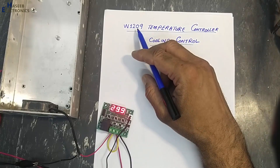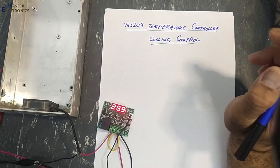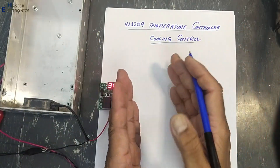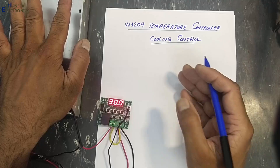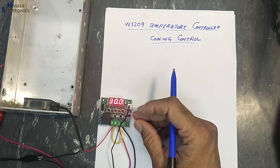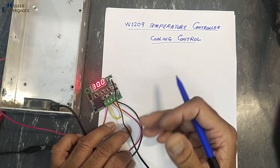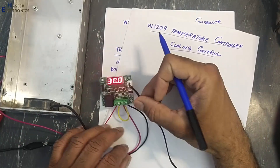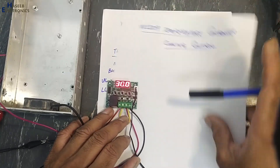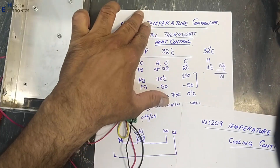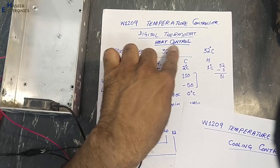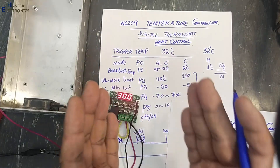Welcome back to my channel. The W1209 temperature controller is used to control heating or cooling of any enclosure, room, or box. It can be used in incubators and other projects. I purchased it from an online shopping store.